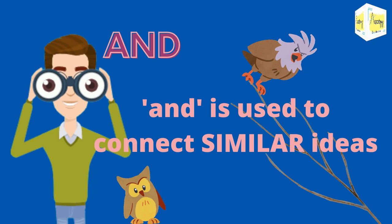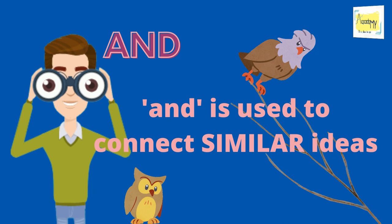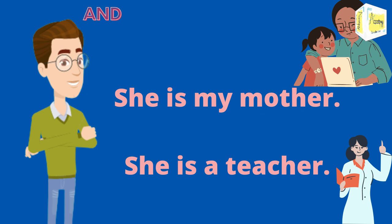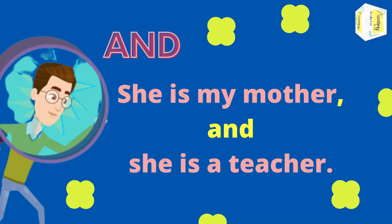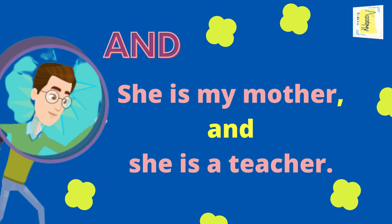The first conjunction is 'and.' Conjunction 'and' is used to connect similar ideas. Look at these two sentences: 'She is my mother.' 'She is a teacher.' These two sentences have similar ideas, so we can connect them using conjunction 'and': 'She is my mother and she is a teacher.'